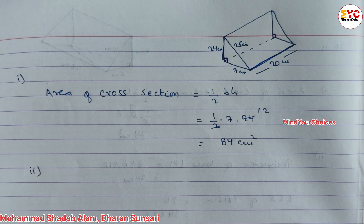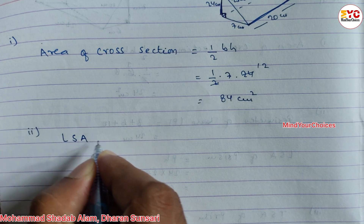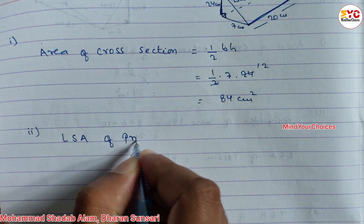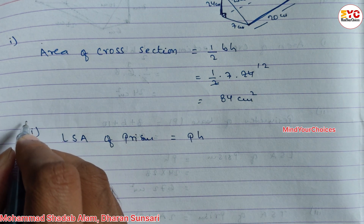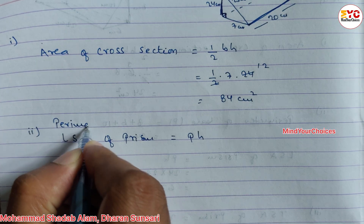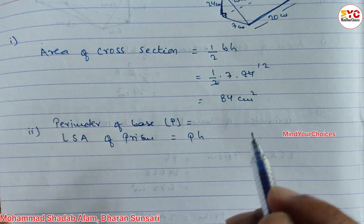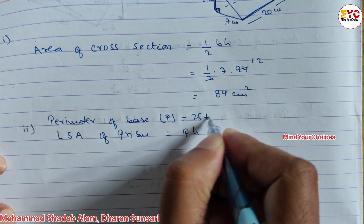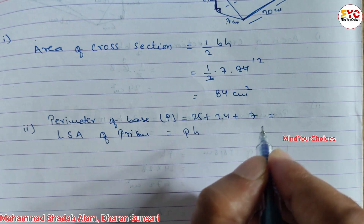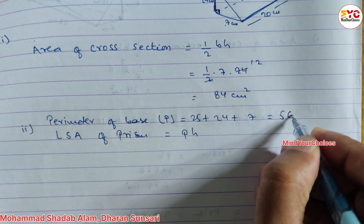In number 2, we have to find out the lateral surface area. LSA of prism — formula is P into H. We have to find out the perimeter first. Perimeter of base P is equal to sum of all sides: 25 plus 24 plus 7. 25 + 24 + 7 = 56 cm. Height of prism is 20 cm. So LSA = 56 × 20 = 1120 cm square.